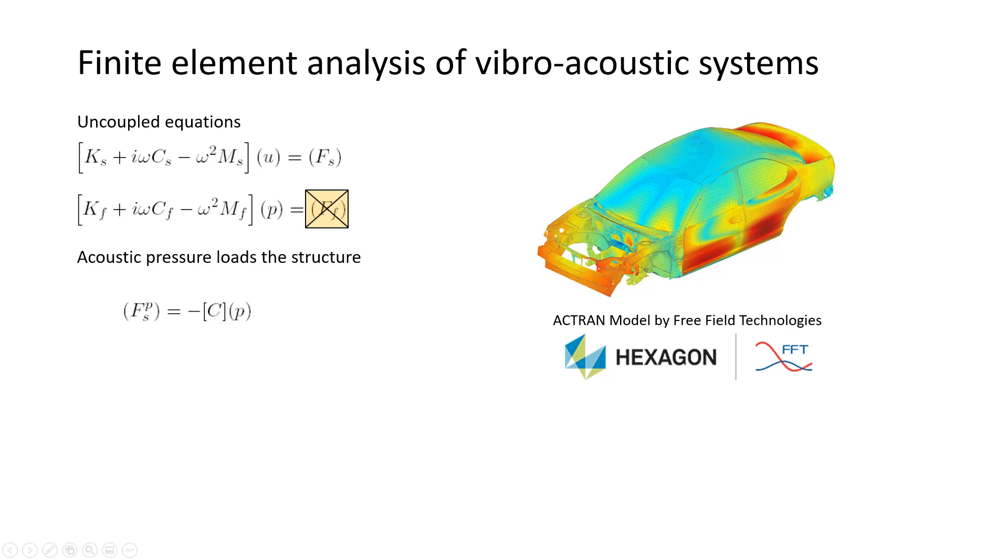First, the sound field, the acoustic pressure represents a load on the structure. That's what we've seen before. And we can write that simply as an additional force vector acting on the structure must be taken into account, which is proportional, which can be deduced proportionally from the pressure vector using an impedance, using an interpolation matrix C or a coupling matrix C.